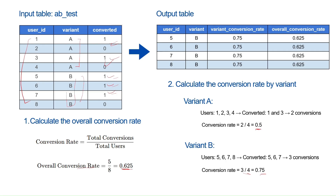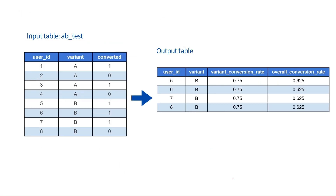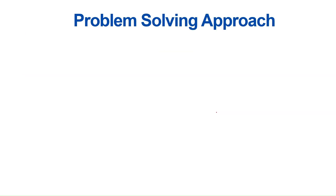Since we only display users whose variant conversion rate is higher than the overall average (0.625), variant B with 0.75 qualifies while variant A with 0.5 does not. That's why the output displays only the details of users from variant B, along with their conversion rate.